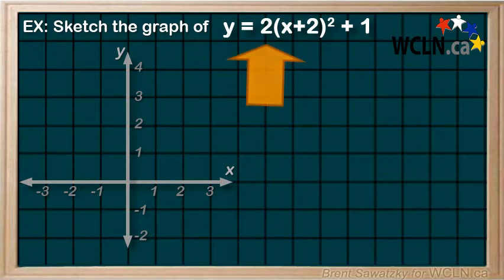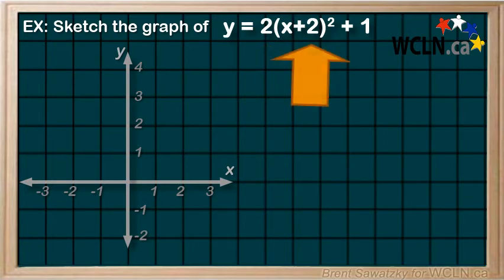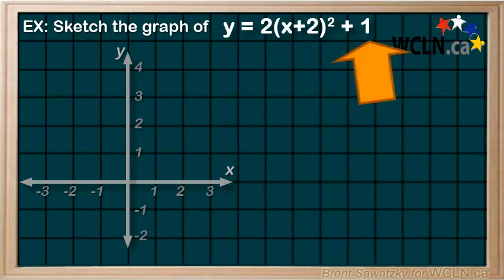We see a vertical expansion by 2 right here, a horizontal translation left by 2 right here, and a vertical translation up by 1 right here.